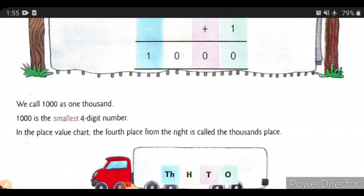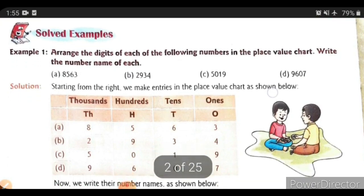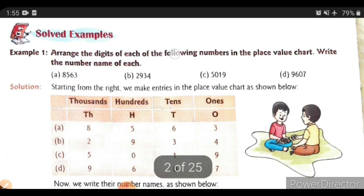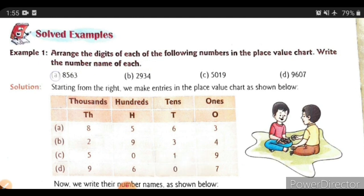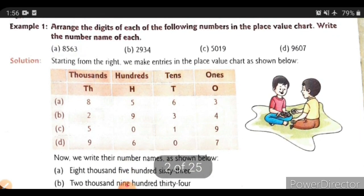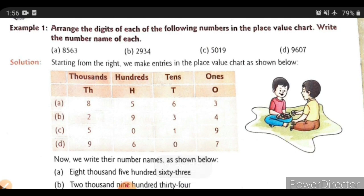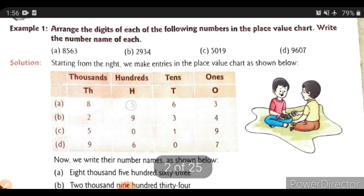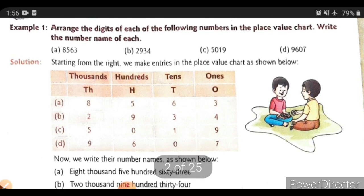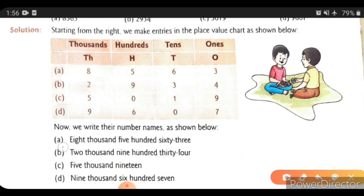Now we will see some solved examples, and after that we will see the exercise. Here is the first question: arrange the digits of each of the following numbers in the place value chart and write the number names. The first example has already been arranged — it shows 1's place, 10's place, 100's place, and 1000's place. The first number is 8563: 8 thousands, 5 hundreds, 6 tens, and 3 ones. Here are 3 more solved examples you can write in your notebook.